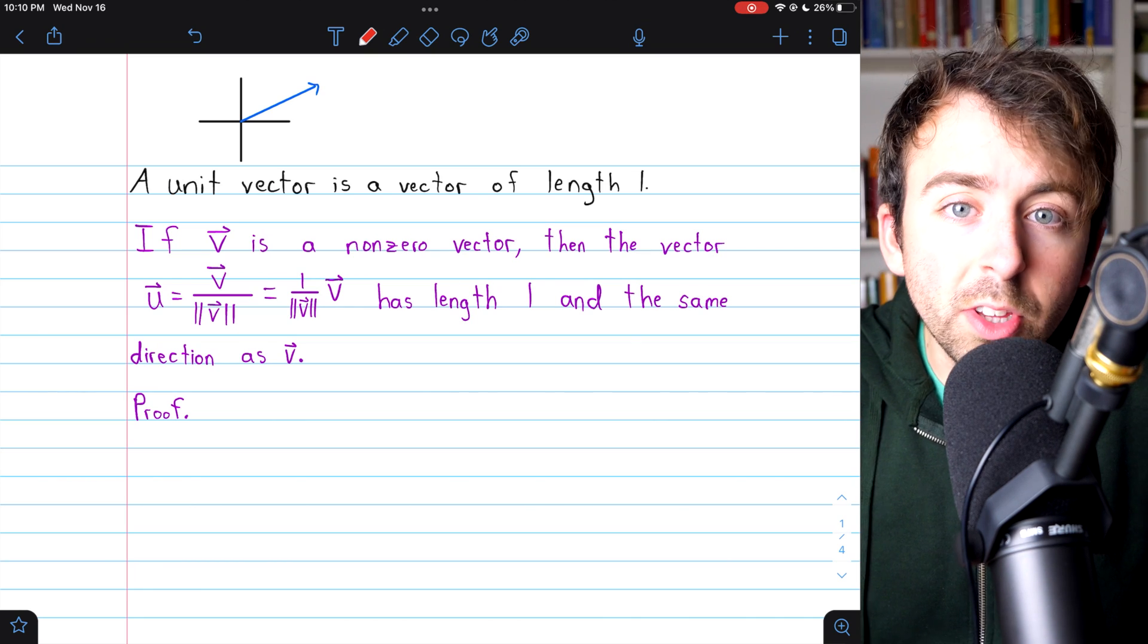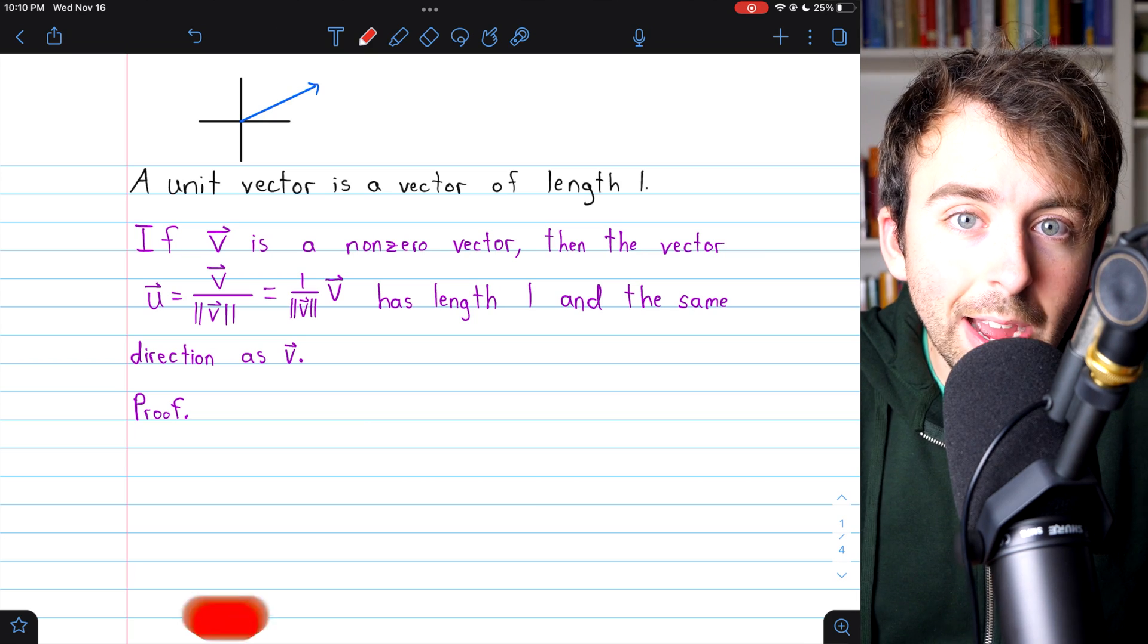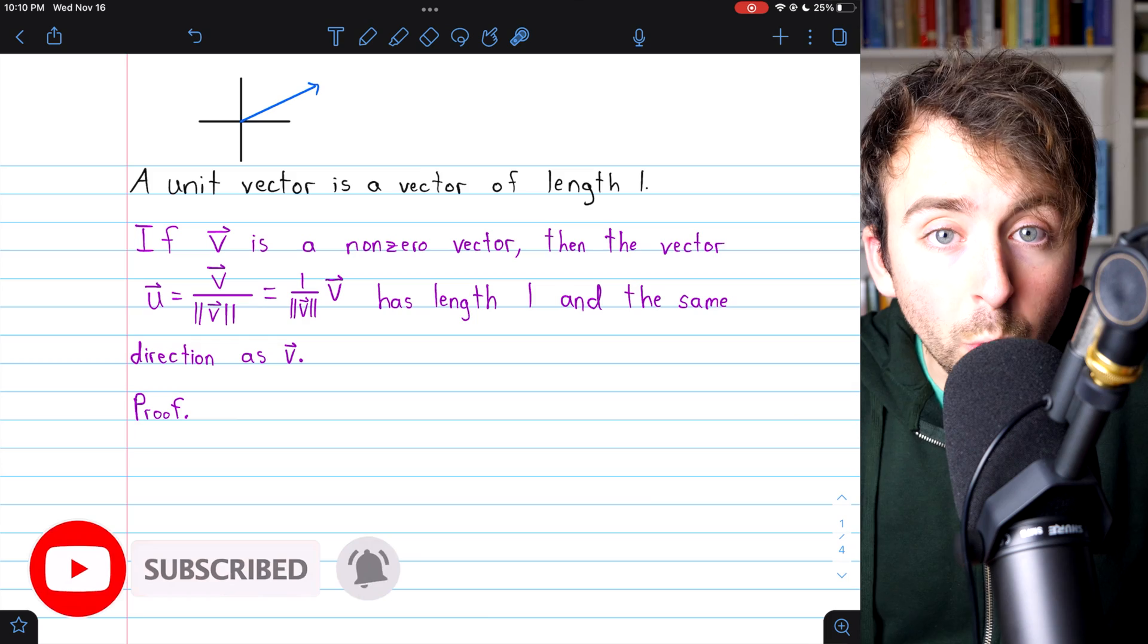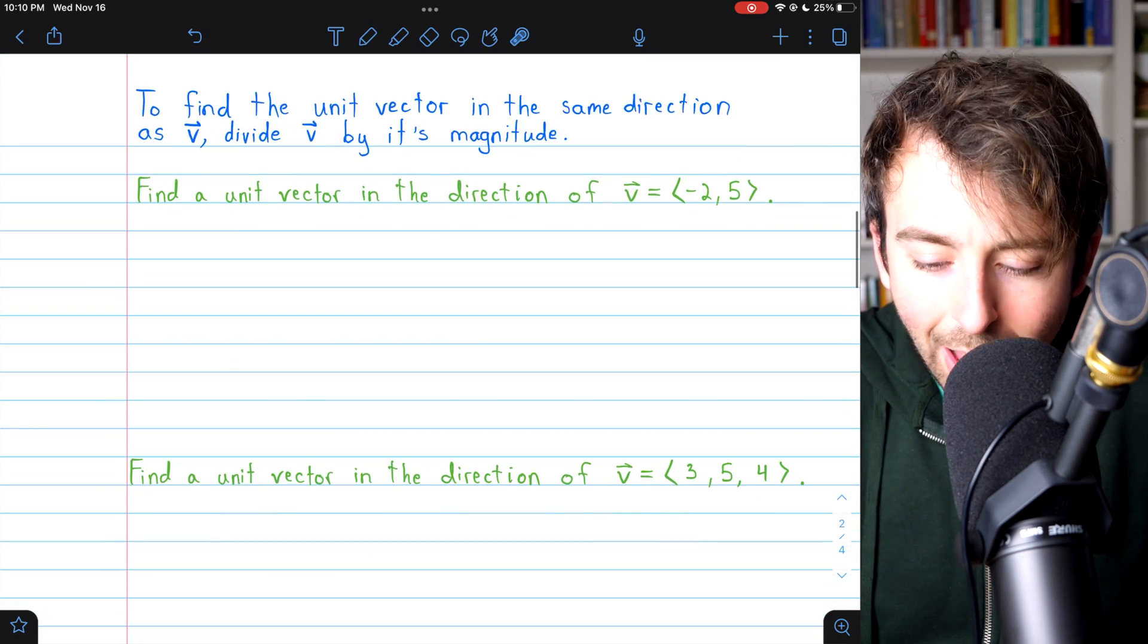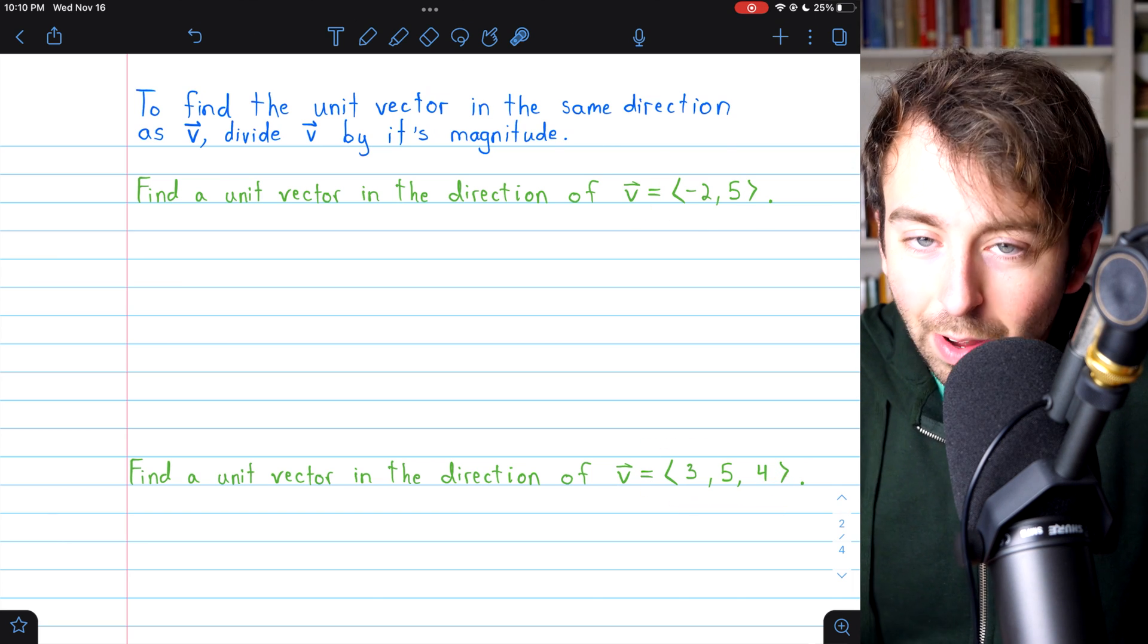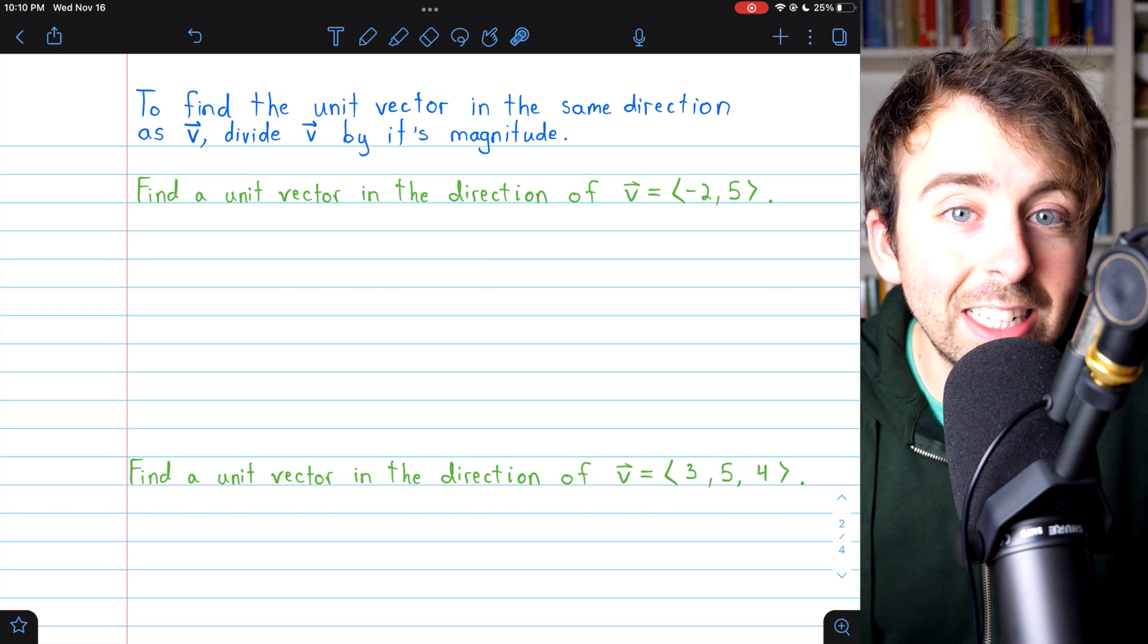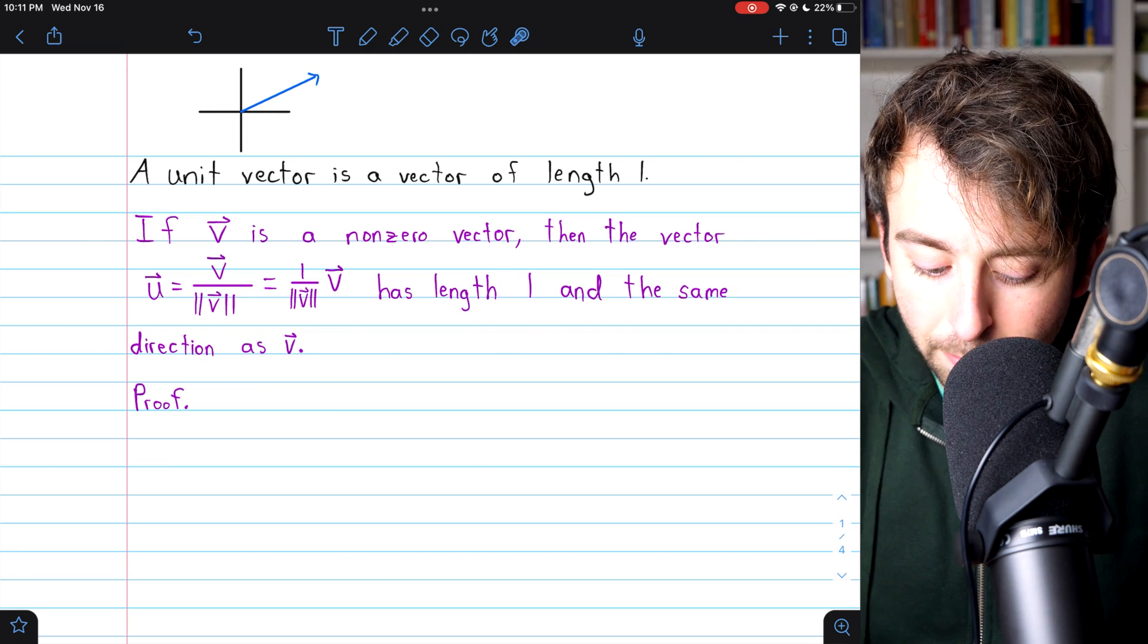In this video, we're going to go over unit vectors, and in particular, how to find the unit vector in the direction of a given vector. We'll quickly talk about where unit vectors come from, and then we'll go through a couple of examples with a vector in the plane and a vector in 3D space. The idea of a unit vector is very simple.